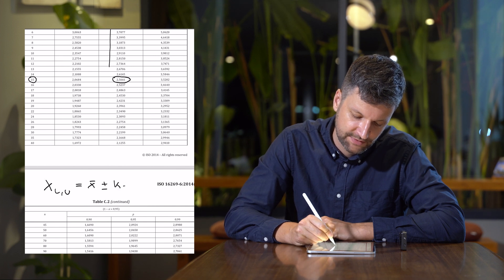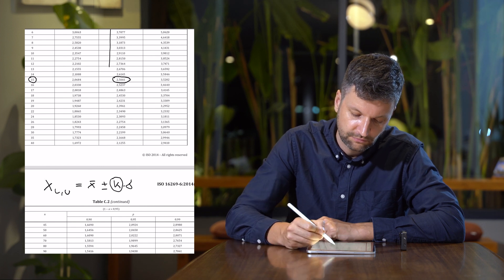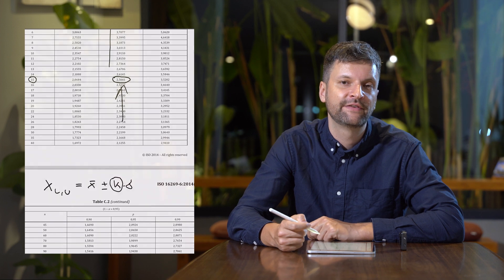K times sigma, and sigma is your standard deviation, and this K value is the one that we got from here, the 2.5661.